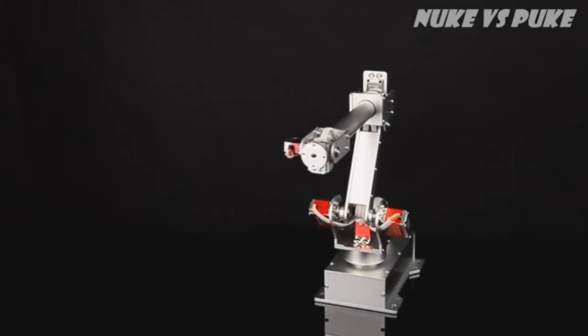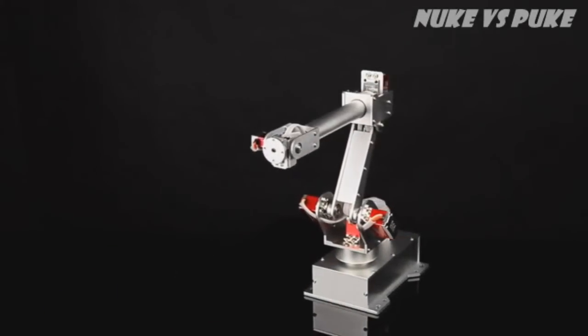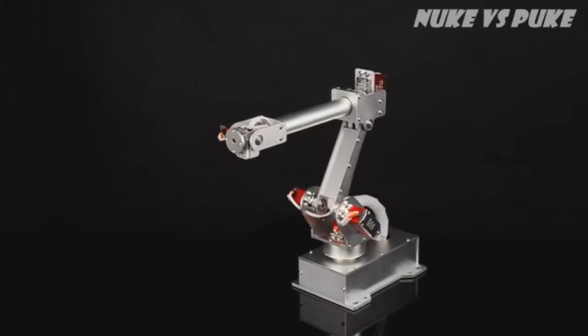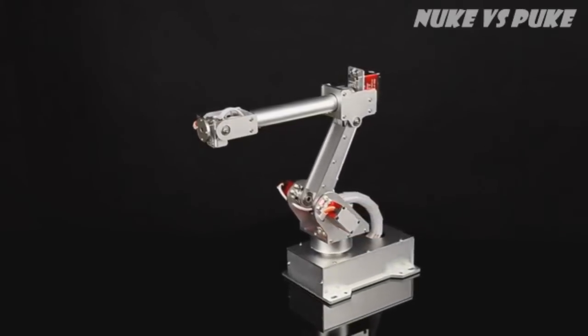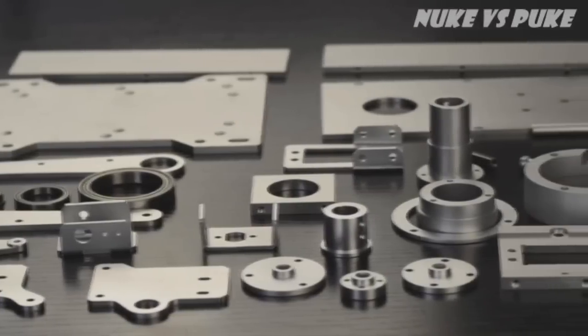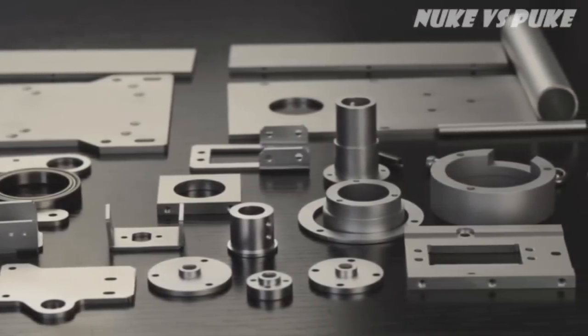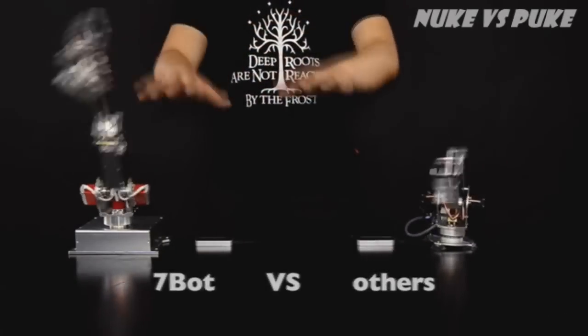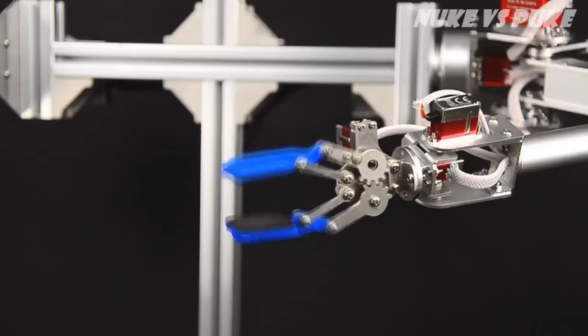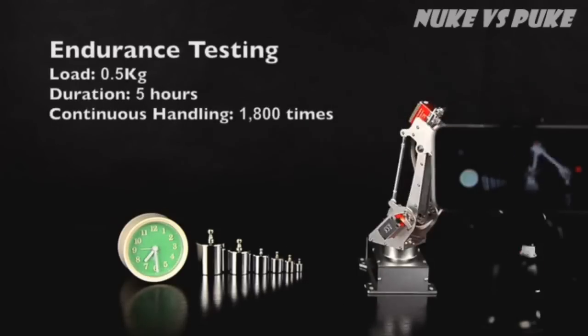7Bot Arm is our first product. It has six degrees of freedom, modeled after the classic ABB industrial robot. The all-aluminum body, six high-torque metal digital servos and optimized control algorithm come into this accurate, stable, agile, and durable 7Bot Arm.